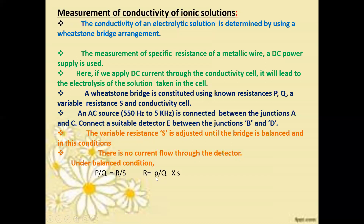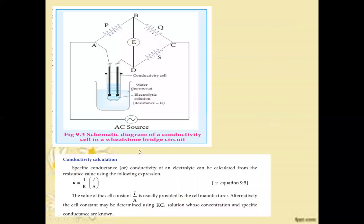From the balanced condition p/q = r/s, we get R = (P/Q) × S. Using this resistance value, we calculate conductivity. The conductivity symbol is kappa, and the formula is kappa = (1/R) × (L/A).